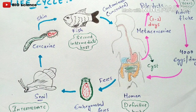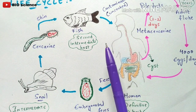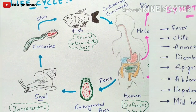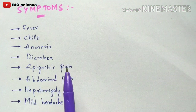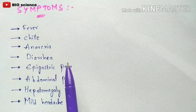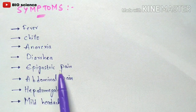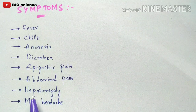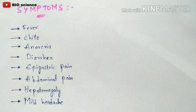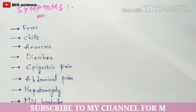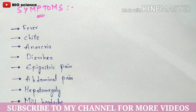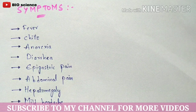Now let us learn about the symptoms seen in a person infected with Clonorchis. Common symptoms include fever, chills, anorexia, diarrhea, epigastric pain, abdominal pain, hepatomegaly, and mild headache. The parasite involved is the liver fluke, with the scientific name Clonorchis sinensis. These are the key clinical manifestations of this parasitic disease called Clonorchis.